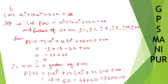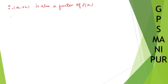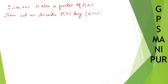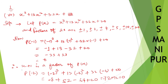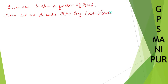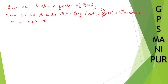Now we have to divide. Let us divide p of x by the factors we got. That is x plus 2 and x plus 1. So x plus 1 into x plus 2: x into x is x squared, 2 into x is 2x, x into 1 is x, and 2 into 1 is 2. So x squared plus 3x plus 2. We are going to divide p of x by x squared plus 3x plus 2.